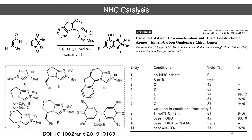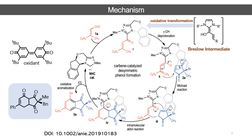Various carbenes were also tested and most were not effective in generating high enantioselective ratios. However, a particular G-type carbene gave very high yield with very high enantiomeric ratio. Now I will discuss the mechanism, which is pretty similar to what I have already discussed.